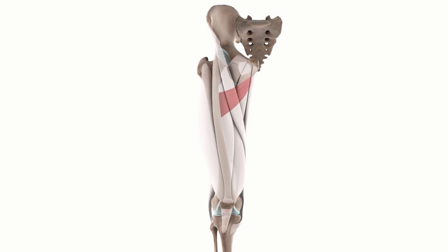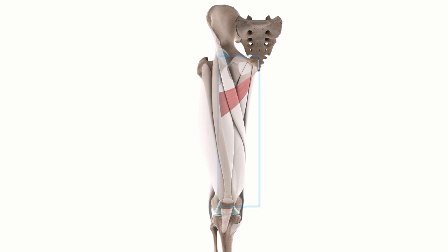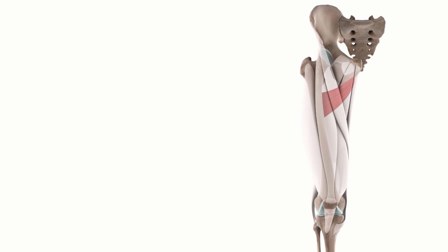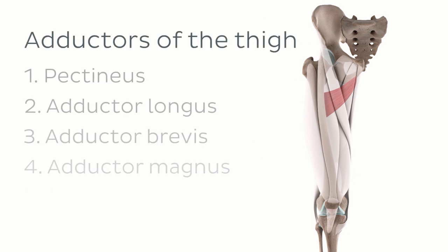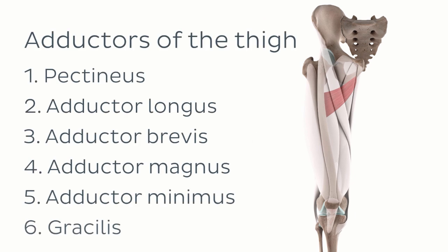First of all, when we look at the adductor minimus muscle here from an anterior view, we can see clearly that it's located on the medial aspect of the thigh, which is what we could also describe as the inside of your thigh. It's functionally classified as one of the adductor group of muscles, all of which are located on the medial aspect of the thigh.